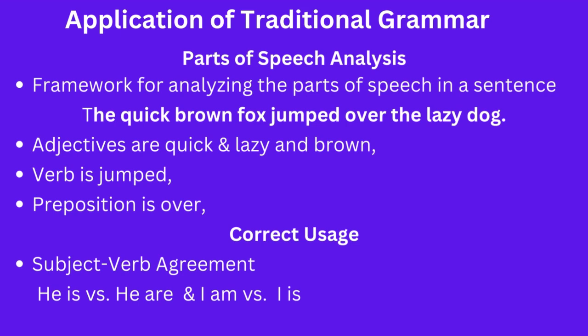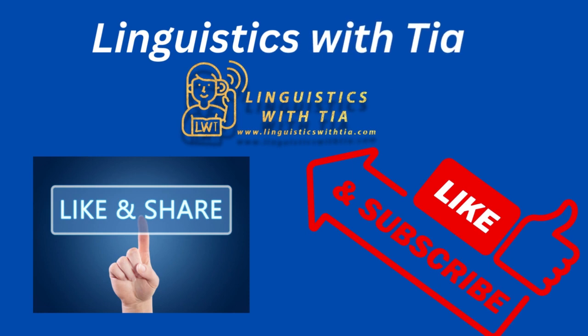Traditional grammar is a prescriptive approach to the study of language that prescribes rules telling us how to say something correctly and grammatically. Its main focus is on writing and transcribing rules, as well as on the mechanical aspects of language like grammar, syntax, and phonology. In contrast, the approach that focuses on the speaker's language itself is the descriptive approach, or the modern form of grammar. Traditional grammar simply focuses on rules and the correct usage of language in grammatically correct sentences.